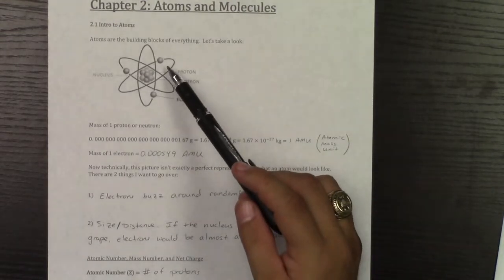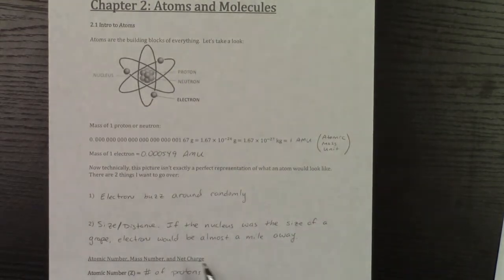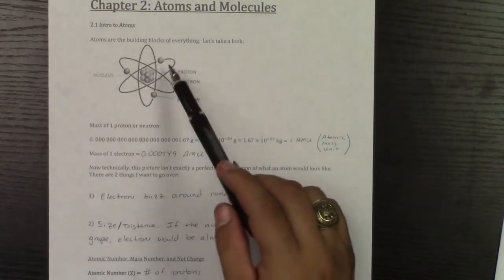First thing is that the electrons don't orbit around the nucleus, they more kind of buzz around. And then as for the size or distance, you're pretty much made of empty space, because if the nucleus was the size of a grape, the electrons would be almost a mile away. So they are not this close.